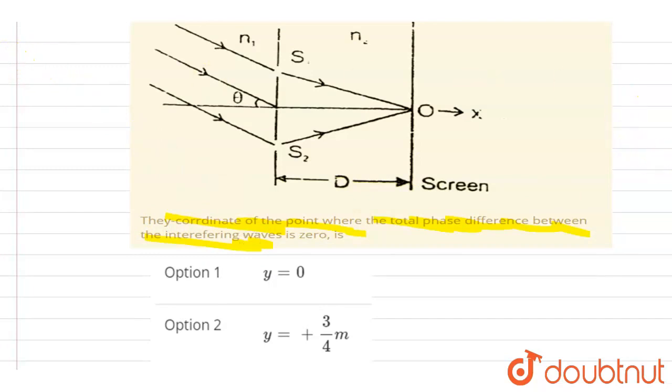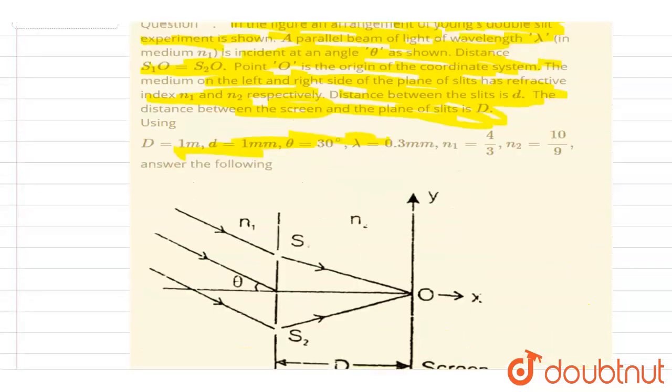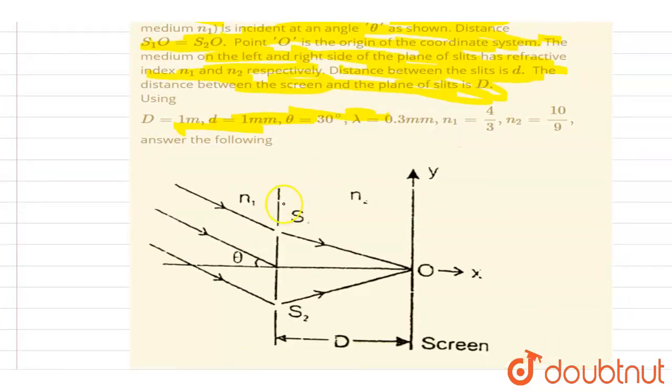So if you see since the medium on the two sides is different, let's use the concept of optical path. Optical path means that you have to convert this path that is travelled here into the path that would be travelled in the vacuum. So the path travelled in vacuum will be equals to N times of path in that medium.